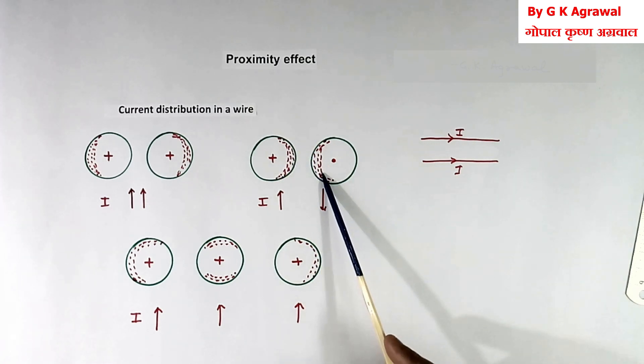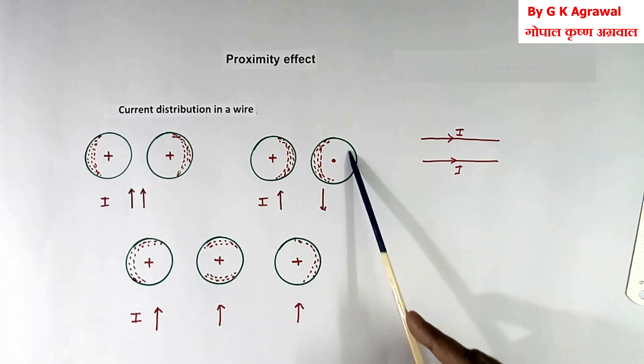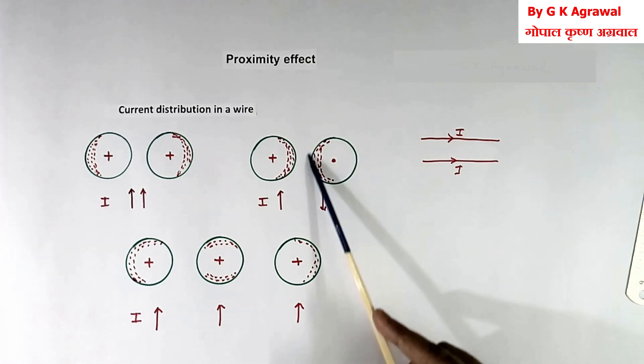This red color is current flowing. This area and this area no current. So because full area current is not flowing, only small area current is flowing.